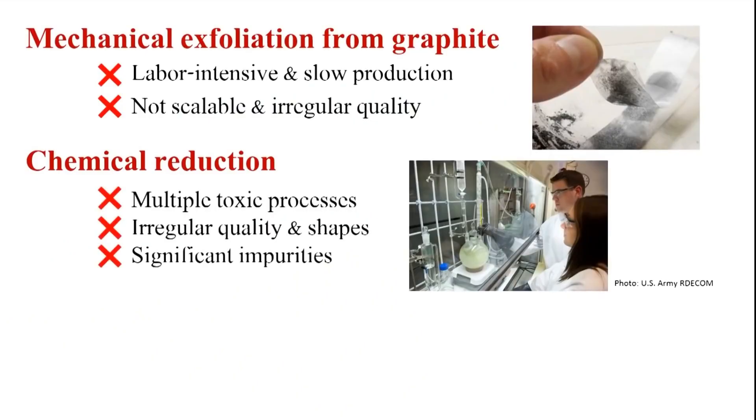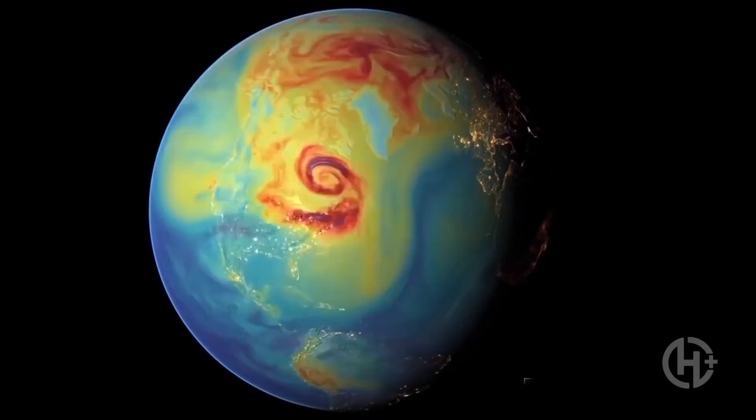Second, there's chemical reduction, which produces substandard quality of graphene. Not to mention it produces toxic chemical byproducts that would wreak havoc on the environment.